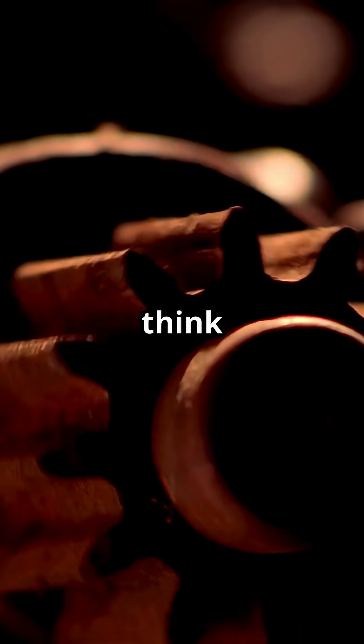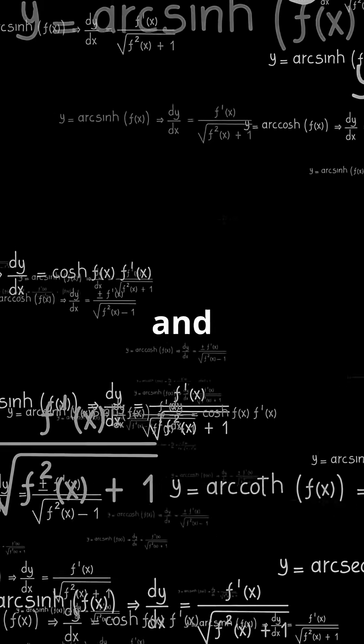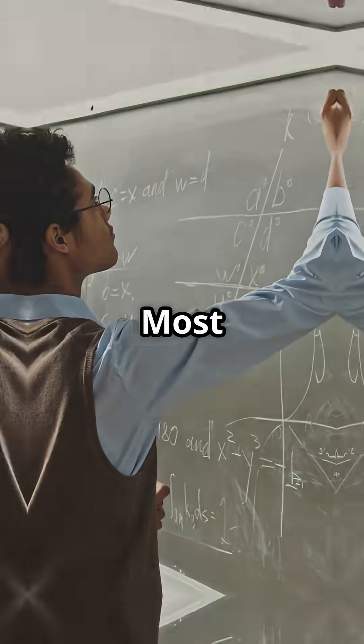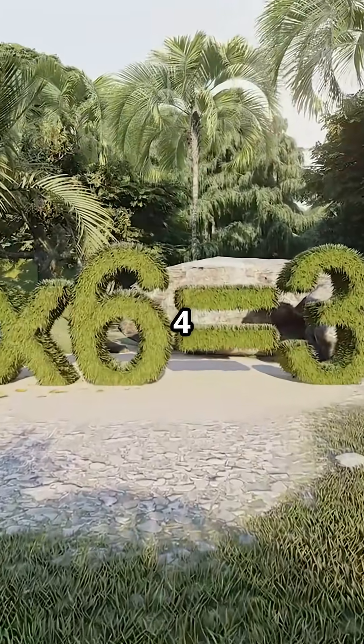If you think factorials are the end of the story, think again. The gamma function rewrites the rules. Let's dive in and decode its hidden magic. Most of us know factorials: 5! means 5 × 4 × 3